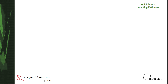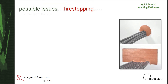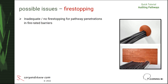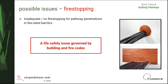The fourth item to verify when auditing cabling system pathways is the presence and correct installation of appropriate fire stop elements in all cases where a network cabling pathway penetrates a fire rated barrier. This is a life safety issue governed by building and fire codes, therefore any omissions must be addressed and remedied.